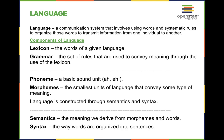A phoneme is a basic sound unit, such as 'ah' and 'a.' Morphemes are the smallest unit of language that can convey some type of meaning. Language is also constructed through semantics and syntax. Semantics are the meanings we derive from morphemes and words, while syntax is the way words are organized into sentences.